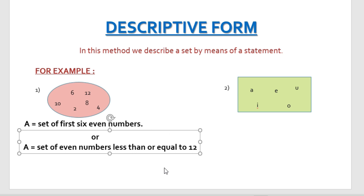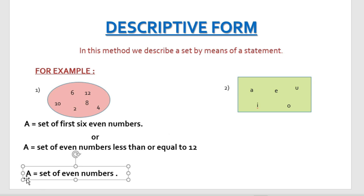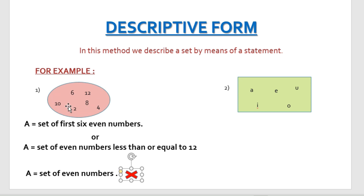Now if we define the set as 'set A is a set of even numbers,' this statement would be wrong because it is not accurately defining the set — it shows no limit, whereas in this group of numbers the limit is up to 12. The statement 'set of even numbers' implies an infinite set with no limit, so this statement is wrong. When describing a set in the form of a statement, we need to ensure the statement accurately defines the set.